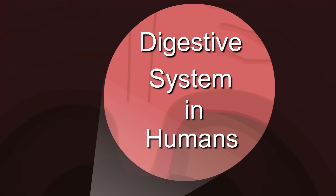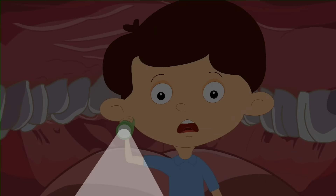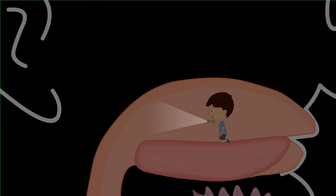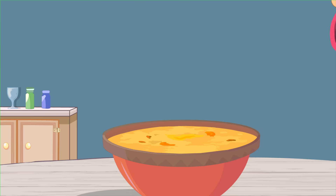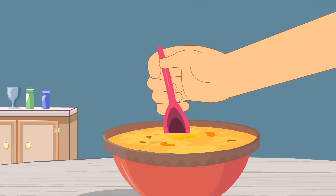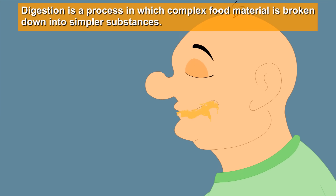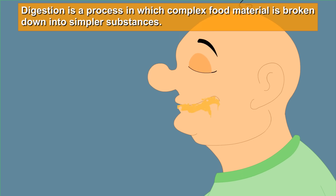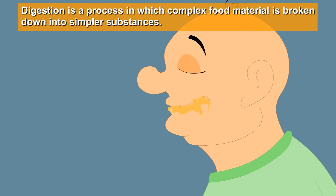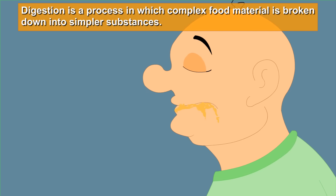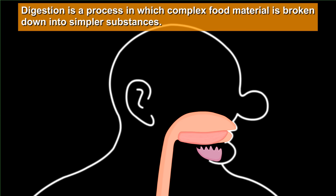Our topic for today is the digestive system in humans. Digestion is a process in which complex food material is broken down into simpler substances.